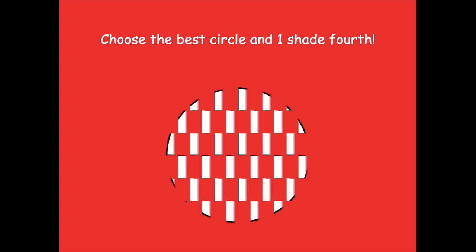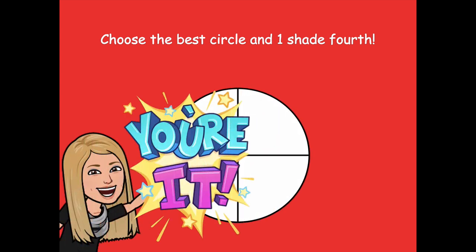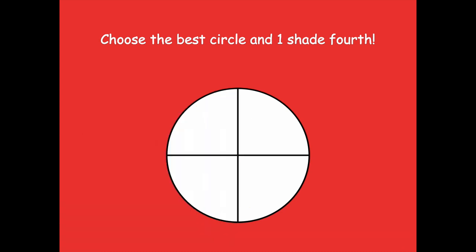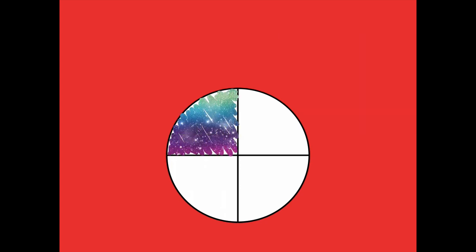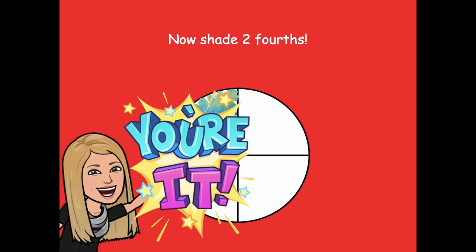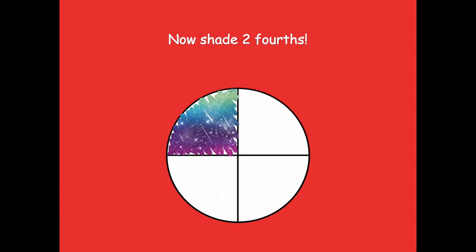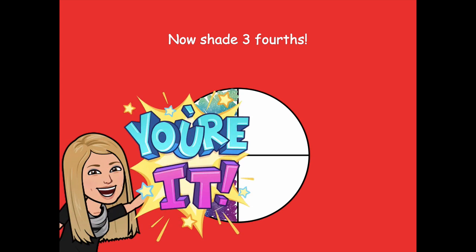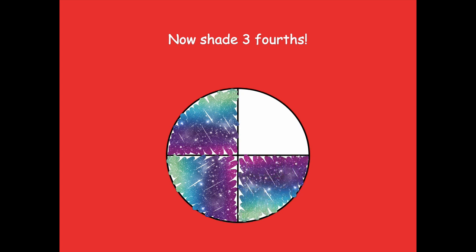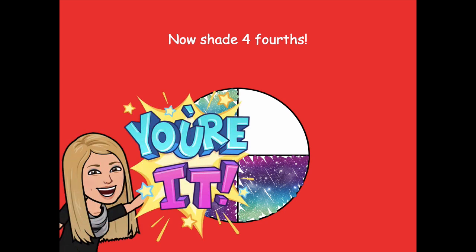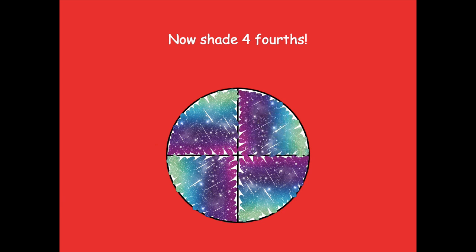Pause if you need more time. Choose the best circle and shade one fourth — pause and shade one fourth, then click play. Here's one fourth shaded. Now shade two fourths — pause and shade two fourths. Here are my two fourths. If you shaded a different part, that's totally fine — as long as you have two of the parts shaded, that's two fourths. Now shade three fourths — pause and shade. What do you think I'm going to tell you to do next? Yeah — four fourths. Pause and shade four fourths. There's my four fourths shaded, which is also one whole.